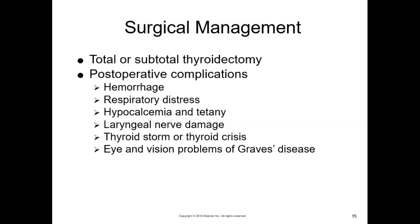Suction oral and tracheal secretions as needed. Thyroid surgery can cause hemorrhage, respiratory distress with impaired gas exchange, parathyroid gland injury resulting in hypocalcemia and tetany, damage to the laryngeal nerves, and thyroid storm. Remain alert to the potential for complications and identify symptoms early. Hemorrhage is most likely to occur during the first 24 hours after surgery. Inspect the neck dressing and behind the patient's neck for blood. A drain may be present and a moderate amount of serosanguinous drainage is normal. Hemorrhage may appear as bleeding at the incision site or respiratory distress caused by tracheal compression.